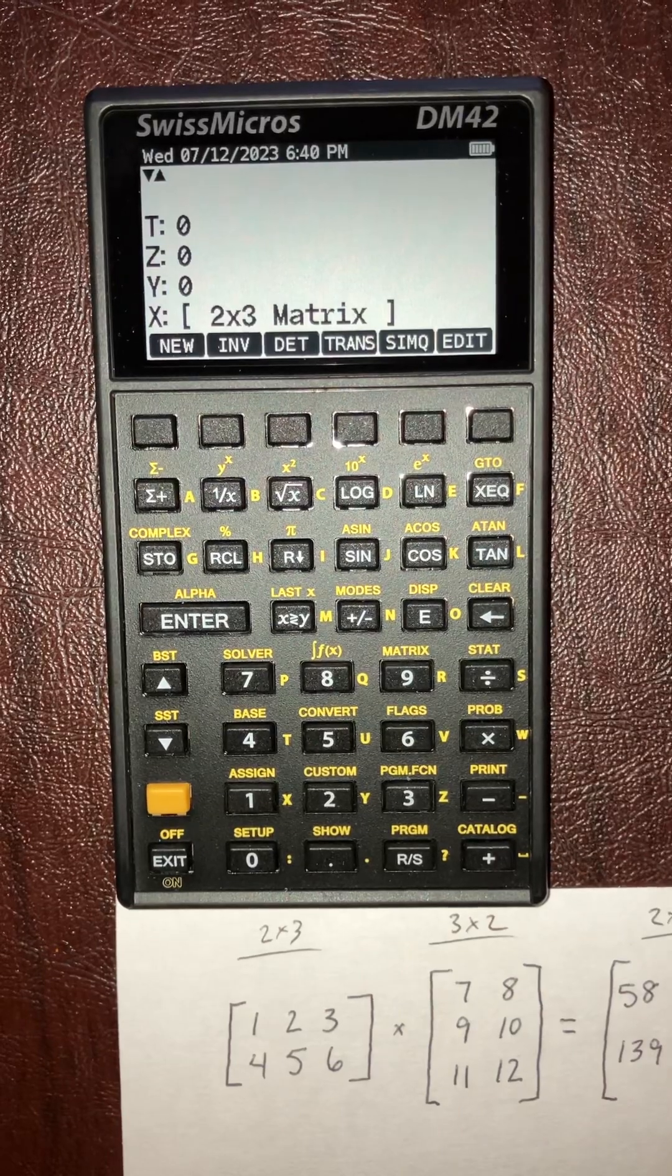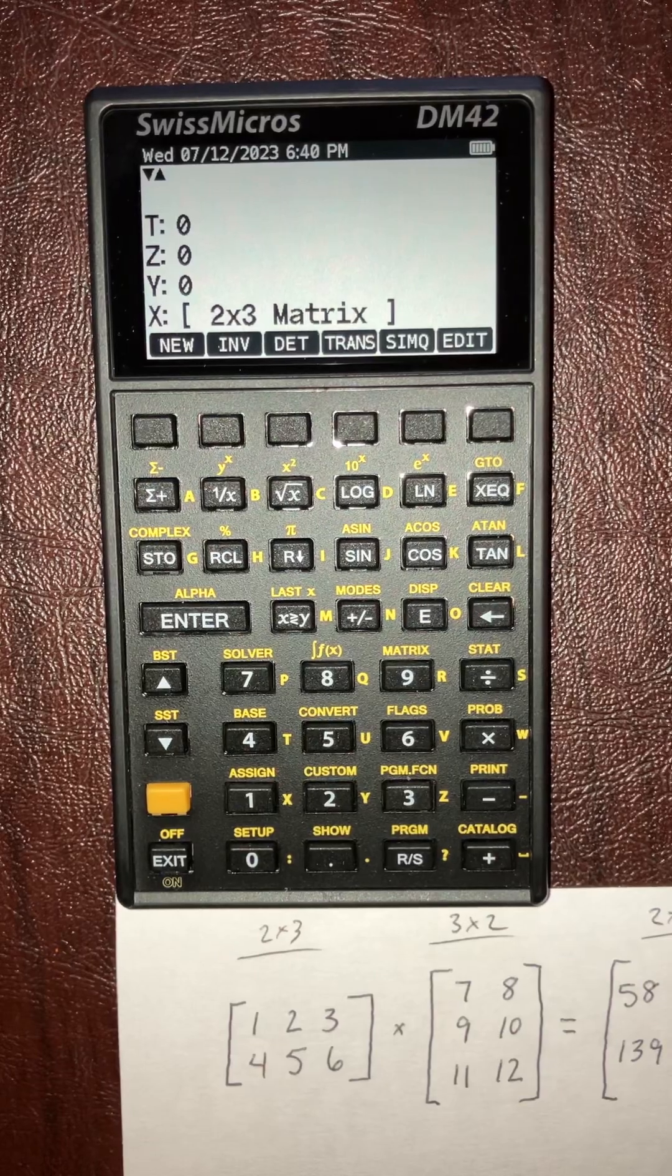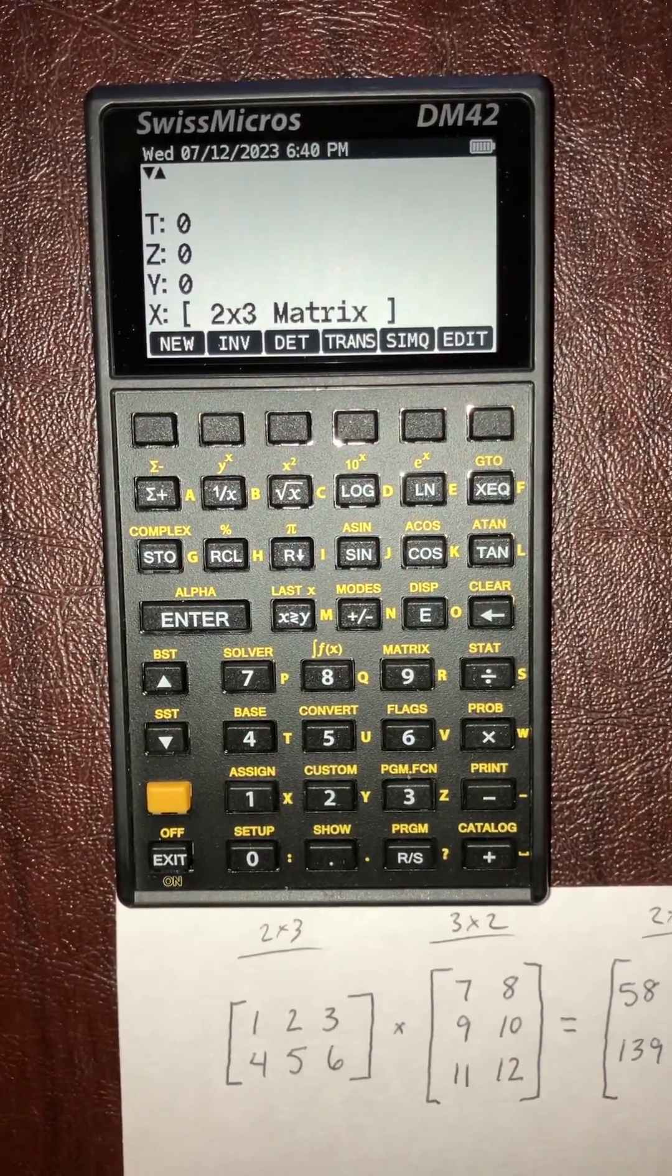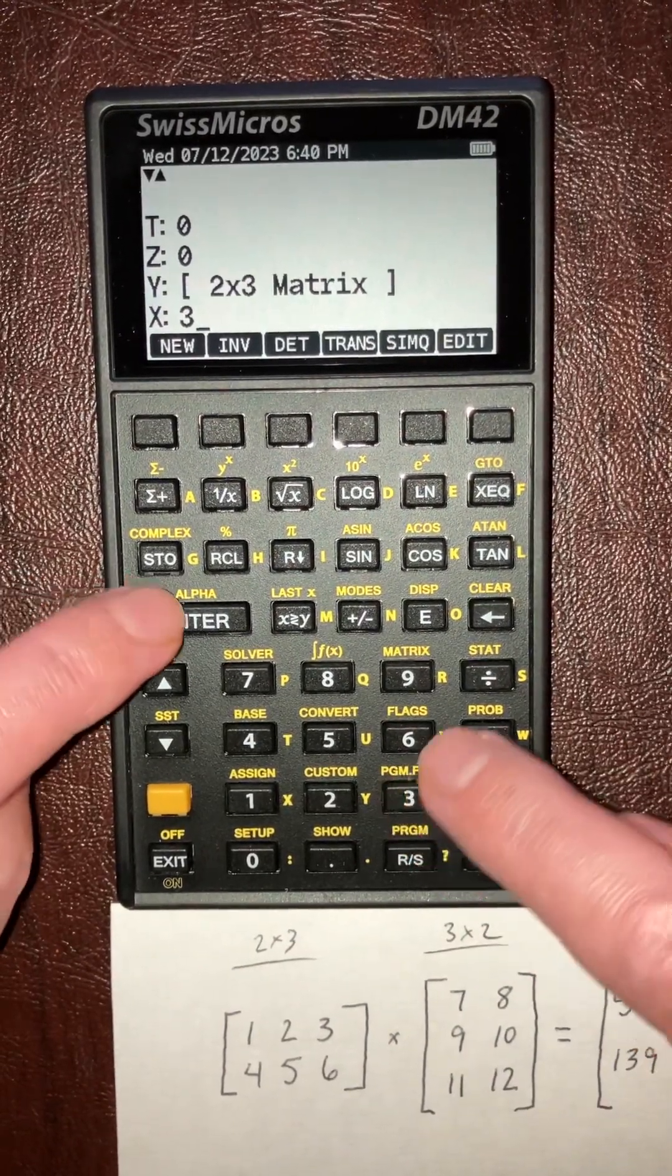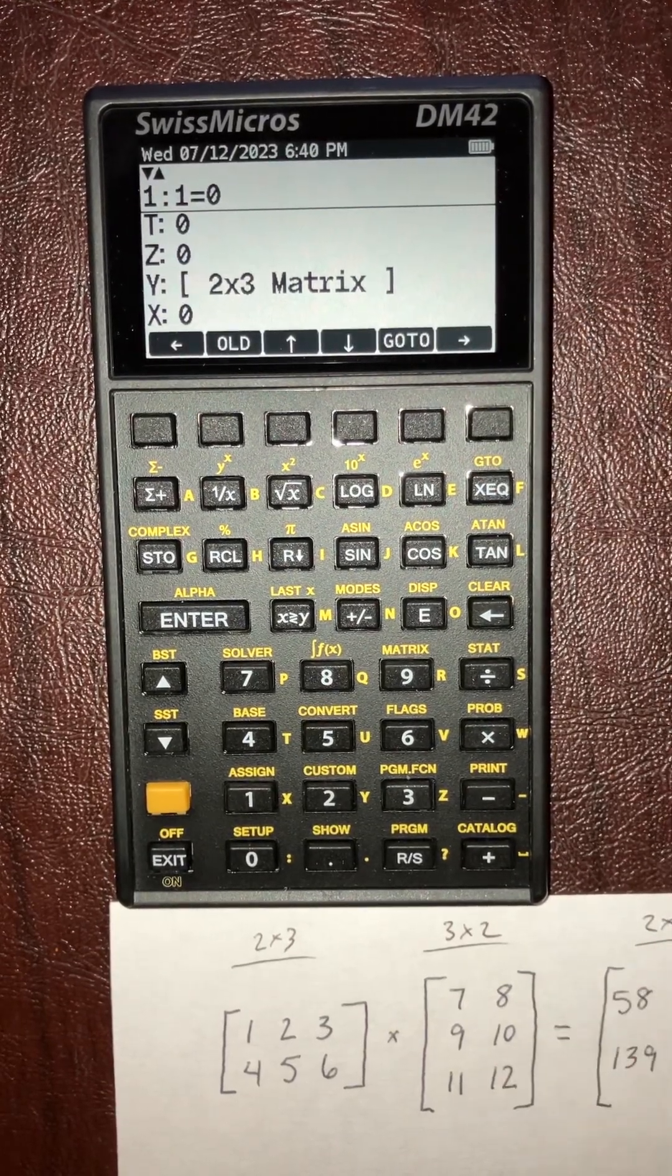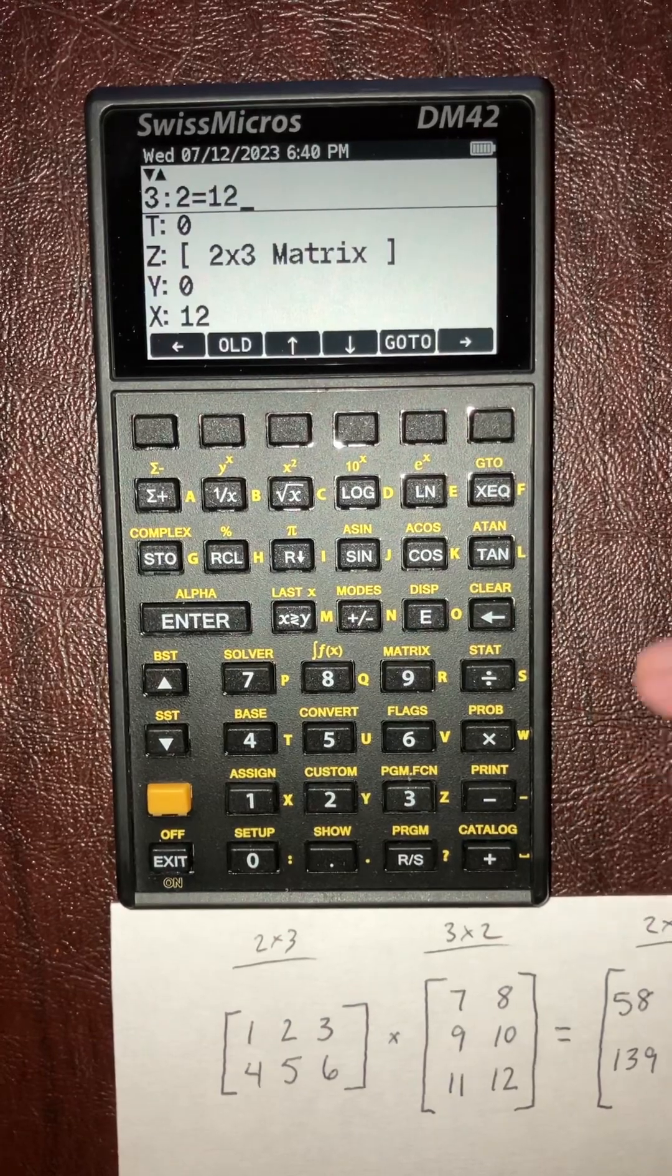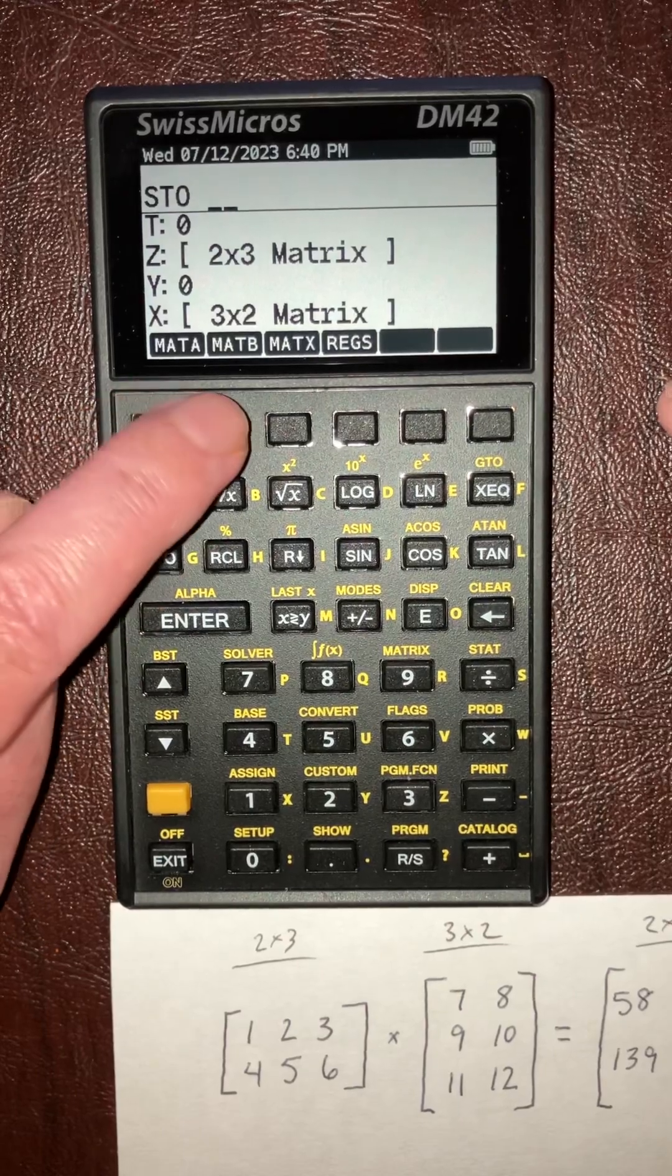This part caused me pain before because the stack gets shifted up. Then I'll enter the second matrix, which is a three by two, this one here. So three, enter, two, new - reserves a three by two matrix. Edit, and these are just seven, eight, nine, ten, eleven, twelve. So I filled that matrix. Next up, we'll store that one in matrix B.